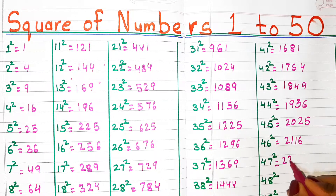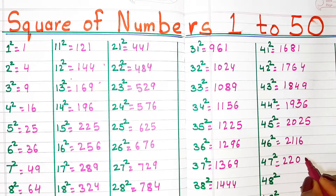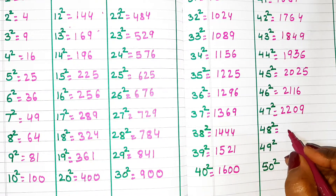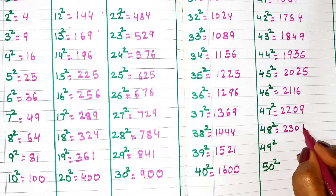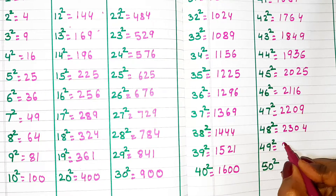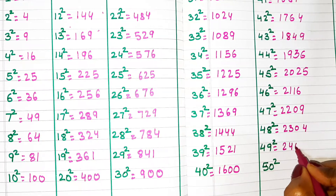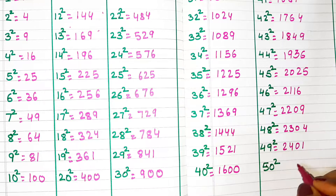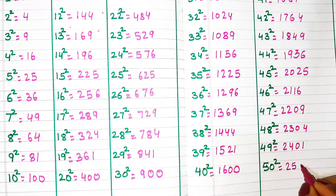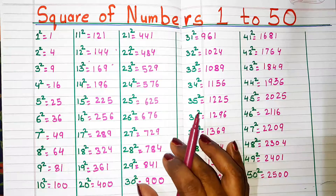Square of 47, 2209. Square of 48, 2304. Square of 49, 2401. Square of 50, 2500.